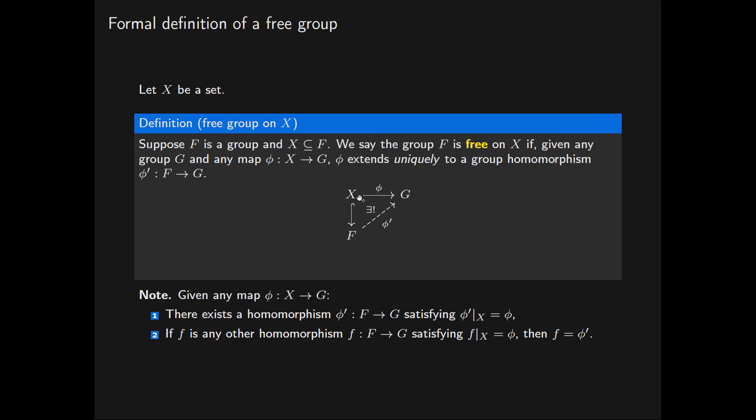Moreover, because any map from X to G is determining a unique group homomorphism from F to G, this just says that there's a one-to-one correspondence between the maps from X into the group G and the group homomorphisms from F to G given as follows.